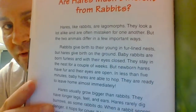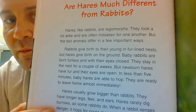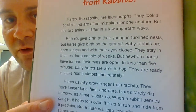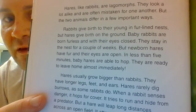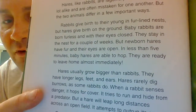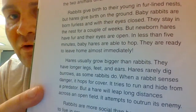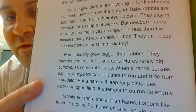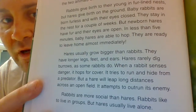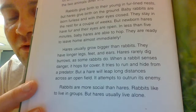Are hares much different from rabbits? Hares and rabbits look a lot alike and are often mistaken for one another, but they differ in a few important ways. Rabbits give birth in a fur-lined nest, but hares give birth on the ground. Baby rabbits are born furless with their eyes closed and stay in the nest for a couple weeks, but newborn hares have fur and their eyes are open. In less than five minutes, baby hares are able to hop. Hares usually grow bigger than rabbits, with longer legs, feet, and ears. Hares rarely dig burrows, and unlike rabbits, when a hare senses danger it leaps long distances across an open field to outrun its enemy. Rabbits are more social — they like to live in groups — but hares usually live alone.